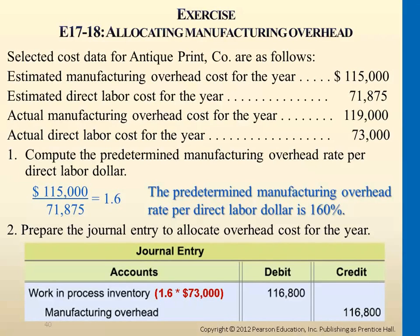The rate we just calculated is useful for multiplying the actual machine hours or labor costs — it depends on the problem. If the allocation base is direct labor cost like this, you multiply the actual labor cost incurred. If it's machine hours, multiply by the machine hours incurred. The entry assigns the cost to Work in Process, so the Work in Process T-account will now have materials, labor, and indirect cost.